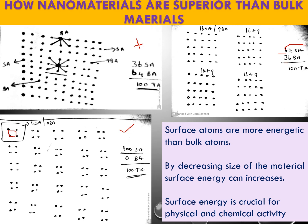Surface atoms are highly energetic. Bulk atoms are totally satisfied — they share their energy and are settled. But surface atoms are unsaturated; they still have energy to share with others, which is why they are highly active materials. When you increase the surface atoms, the total surface energy of the material also increases, giving it different properties than bulk materials.